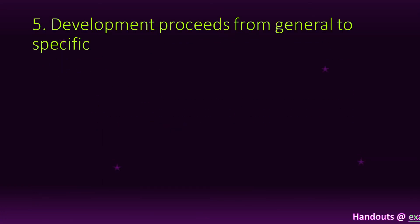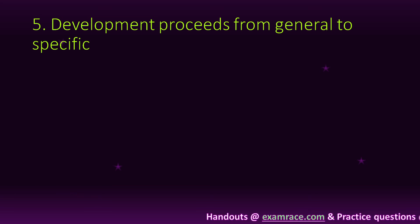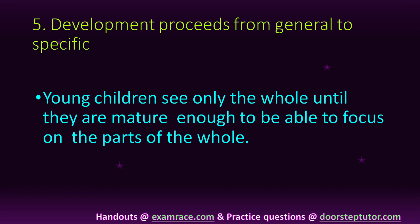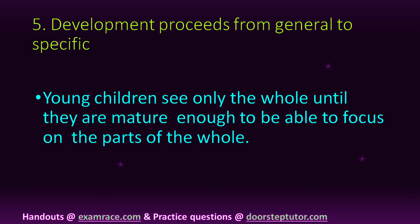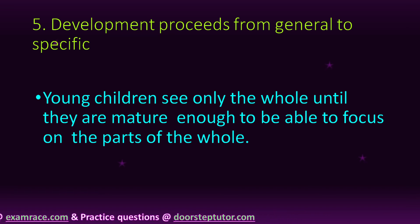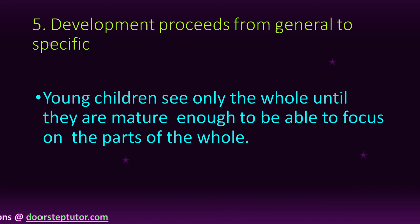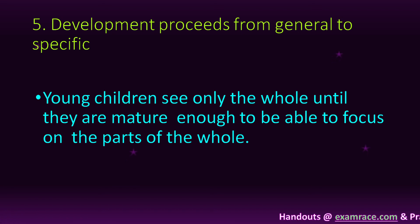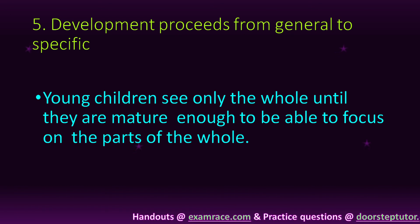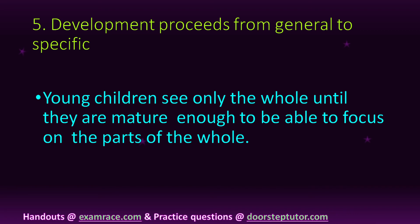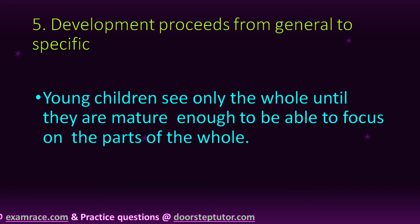The fifth principle is that development proceeds from general to specific. Young children see only the whole until they are mature enough to focus on parts. For example, when a small child is given an apple, the child holds it with both hands — that is called general.